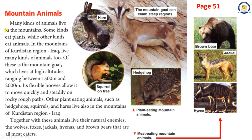Mountain animals. Many kinds of animals live in the mountains. Some kinds eat plants, while other kinds eat animals. In the mountains of Kurdistan region Iraq, live many kinds of animals. Of these is the mountain goat, which lives at high altitudes ranging between 1,500 m and 2,000 m. Its flexible hooves allow it to move quickly and steadily on rocky rough paths. Other plant-eating animals, such as hedgehogs, squirrels, and hares also live in the mountains of Kurdistan region Iraq. Together with these animals live their natural enemies — the wolves, foxes, jackals, hyenas, and brown bears that are all meat eaters.